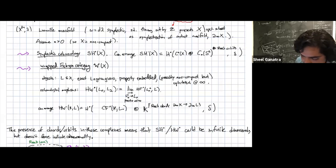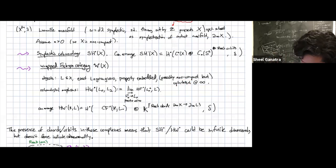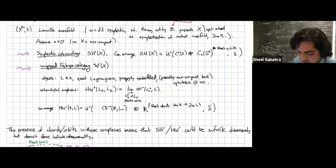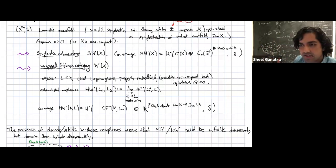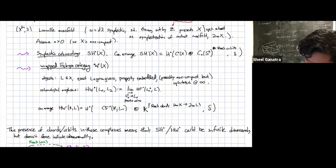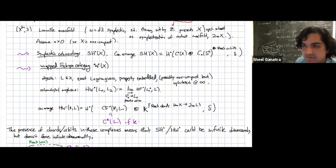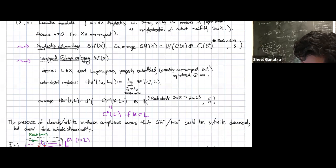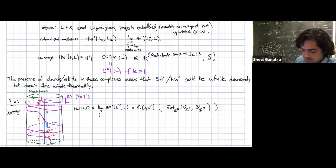On the open string side, we have the wrapped Fukaya category. Its objects are exact Lagrangians, properly embedded but possibly non-compact — they have to be cylindrical at infinity. The morphisms, at least cohomologically, are wrapped Floer homology. You can think of these as limiting Floer homologies of the wrapping of one Lagrangian in the positive Reeb direction near infinity with another. If K equals L, you can set this up so that this is just cochains on K plus Reeb chord contributions from Reeb chords between the Legendrian boundaries at infinity.